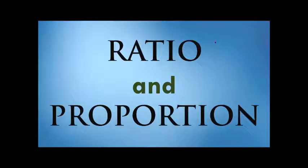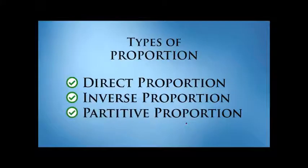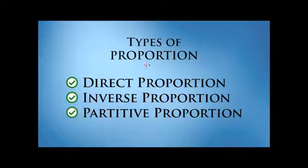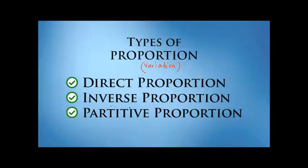We are still on the continuation of the lessons for ratio and proportions. After knowing what ratio is, it is followed by proportion. Last meeting we learned what a proportion is. Now we're going to learn the types of proportion. We have three: direct proportion, inverse proportion, and partitive proportion. These are also called types of variation. We will define each and give some examples.